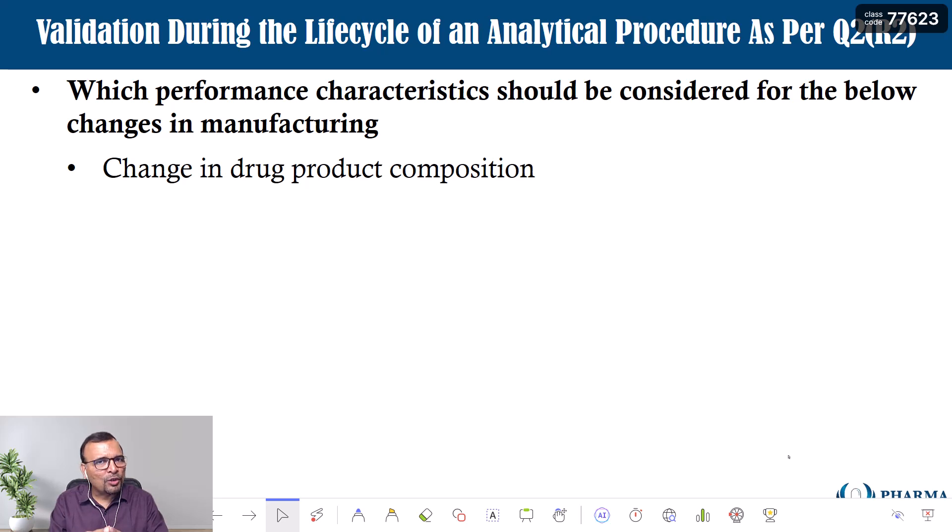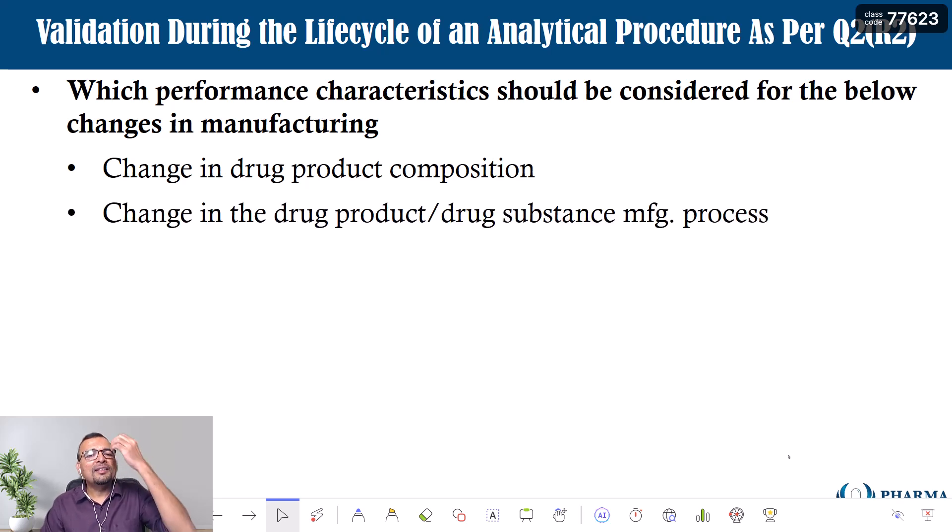We are discussing validation during the life cycle of an analytical procedure as per ICH guideline Q2 R2. In the last video we discussed the performance characteristics and parameters needed for conducting revalidation for an analytical procedure in case of change in manufacturing — specifically the change in drug product composition. If you have not watched that video, please go back and watch it first.